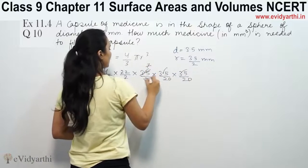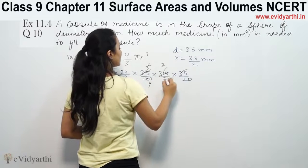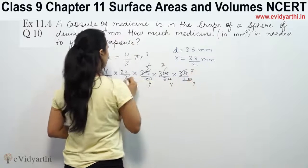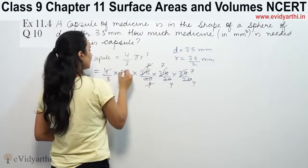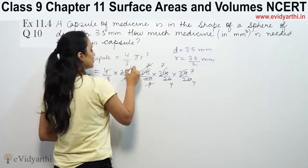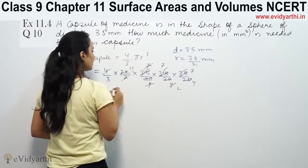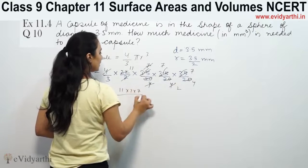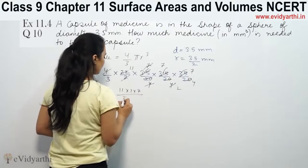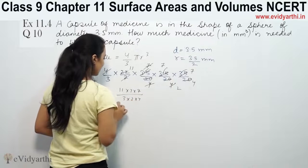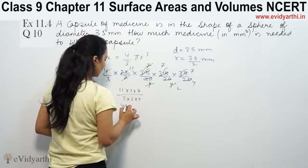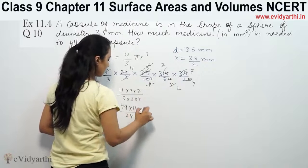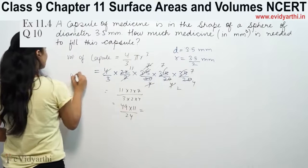Simplifying: the 7s cancel, the 4s cancel, the 2s cancel, leaving 1 × 7 × 7 by 3 × 2 × 4. So this gives us 49 × 11 by 24. And 49 × 11 equals 539.